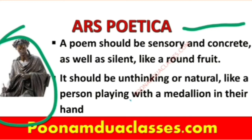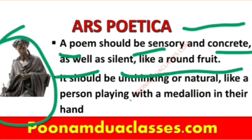In Ars Poetica, Horace gives advice to future and contemporary writers. He says a poem should be sensory and concrete as well as silent like a round fruit — very easy and smooth, easily understandable by the reader. Further, he says it should be unthinking or natural, like a person playing with a medallion, quiet, melodious, and smooth so that it enters easily into the minds of readers.